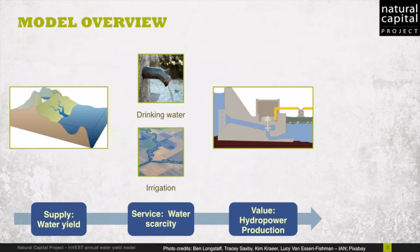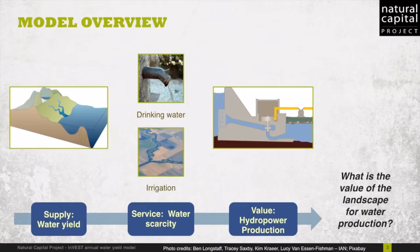This remaining water can then be used for hydropower production, among other things, and we can put a monetary value on the amount of energy produced by water running off of the landscape. So this model allows us to start answering the question: what is the value of the landscape for water production?